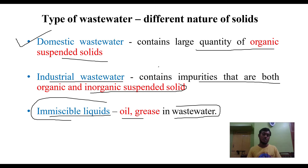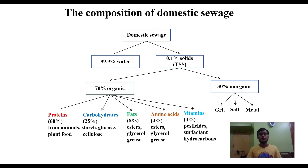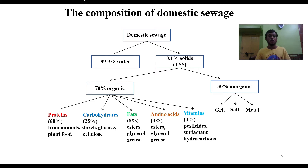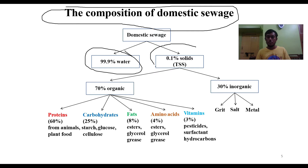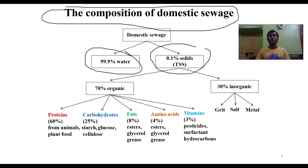The composition of domestic sewage forms a very important foundation in understanding wastewater composition. Domestic sewage consists of 99.9% water and 0.1% solids. Although it appears mostly water, the impurity level represented by that 0.1% is significant.